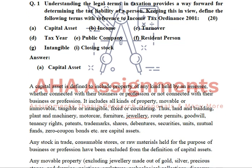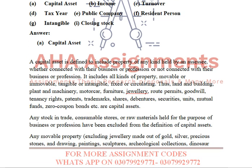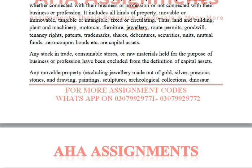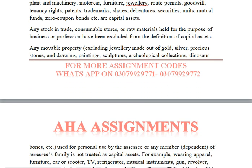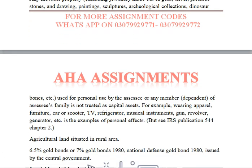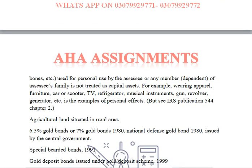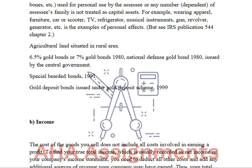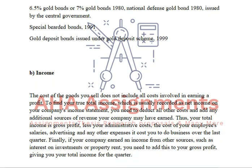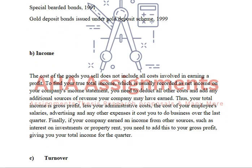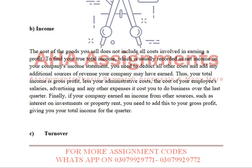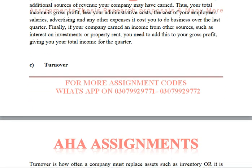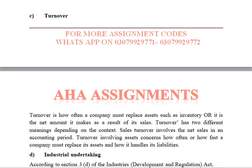In question number 1, we have some legal terms defined under the Tax Ordinance 2001. First is capital asset. After that, we will look at income — what is income according to the Tax Ordinance 2001. Moving to part C, that is turnover — you have to define what is turnover.